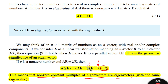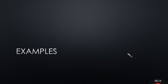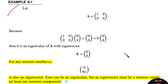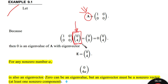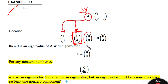Let's go through some examples. Assume A equals the matrix [1,0; 0,0]. We are given the vector [0,4]. Multiplying A by [0,4] gives us [0,0], which we can write as 0 times [0,4] — so the result is lambda times the same vector.